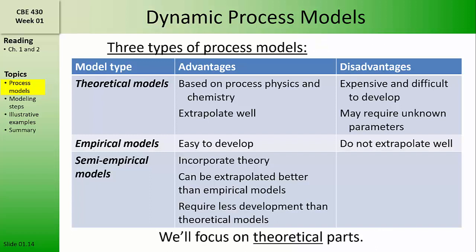There are three main types of process models that are frequently used. Theoretical models are based on process physics and chemistry, and because they're based in theory, they can extrapolate well from known conditions. However, theoretical models are often expensive and may be difficult to develop, and they may require parameterization with lots of unknown parameters. We need to know a lot of details about the model and the equipment in order to formulate the model.